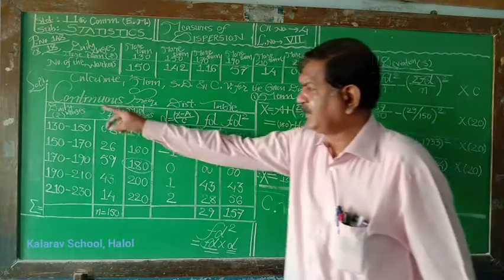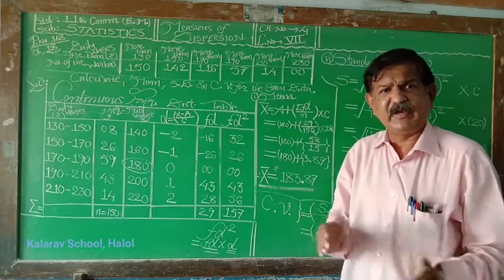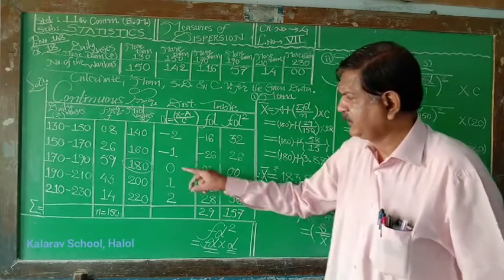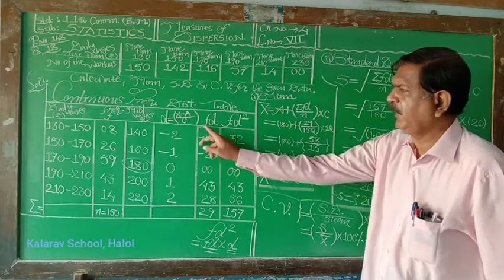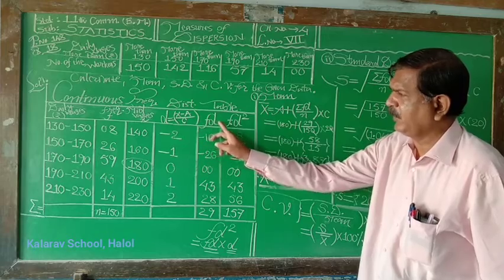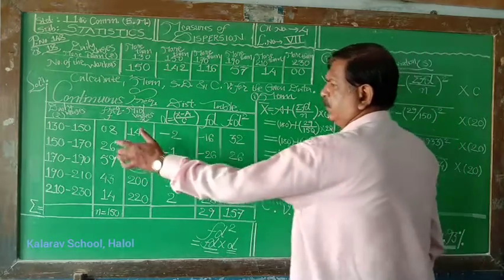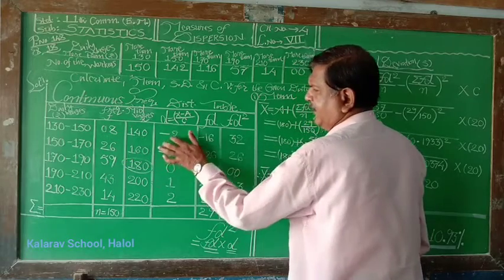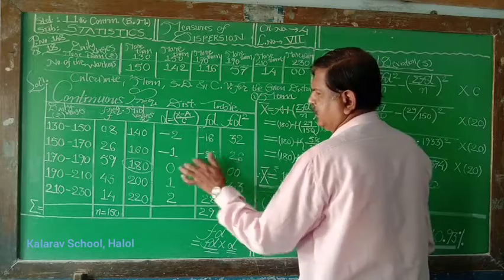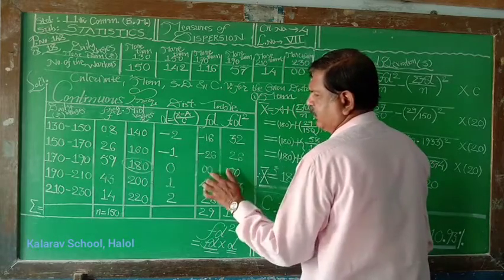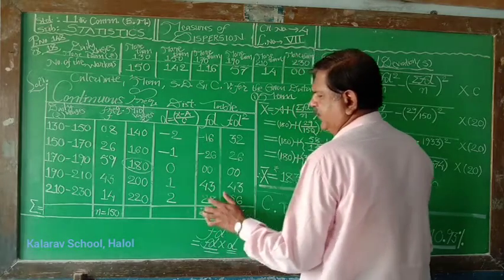If the class intervals is the same, equal class width or class interval is same, then -2, -1, 0, 1, 2, etc. f multiply by d, f into d, product of f and d. 8 multiply by minus 2, 16. 26 multiply by minus 1, 26. 0 multiply by 0, 0. 43 multiply by 1, 43. 14 multiply by 2, 28.